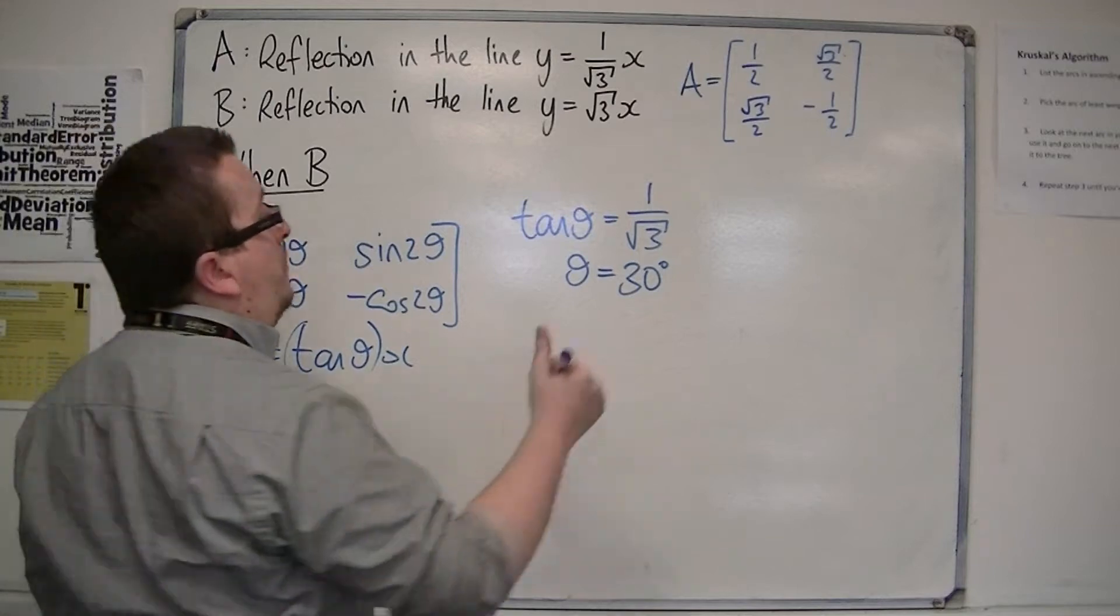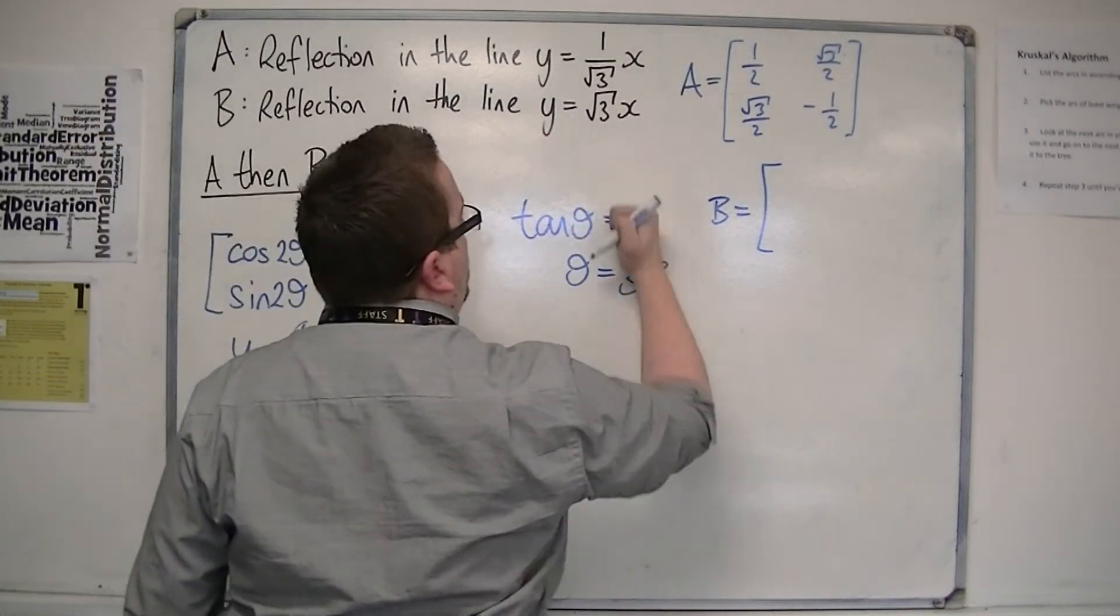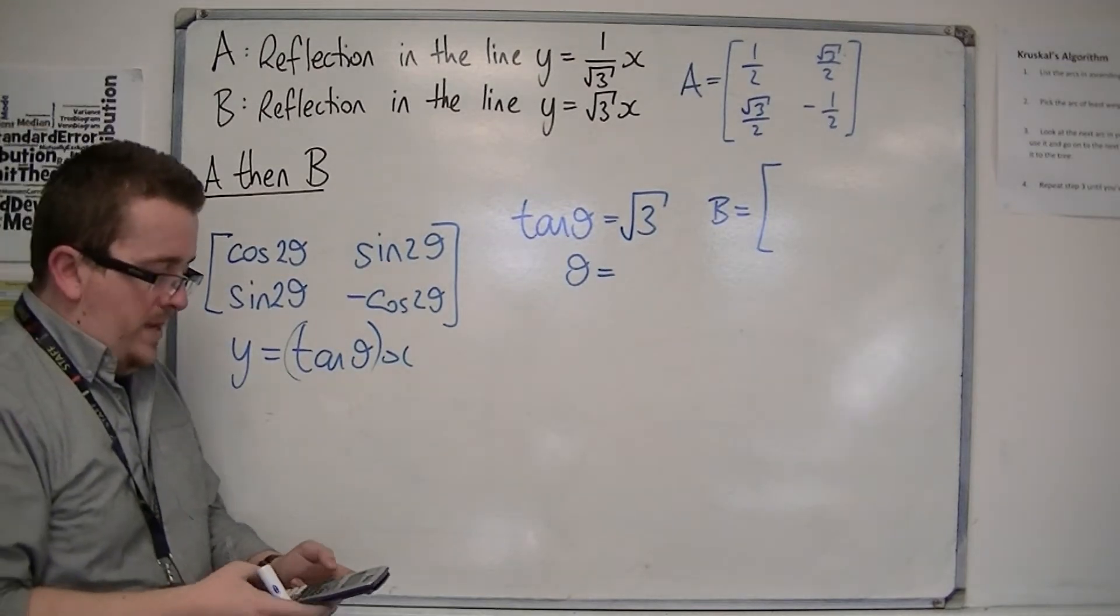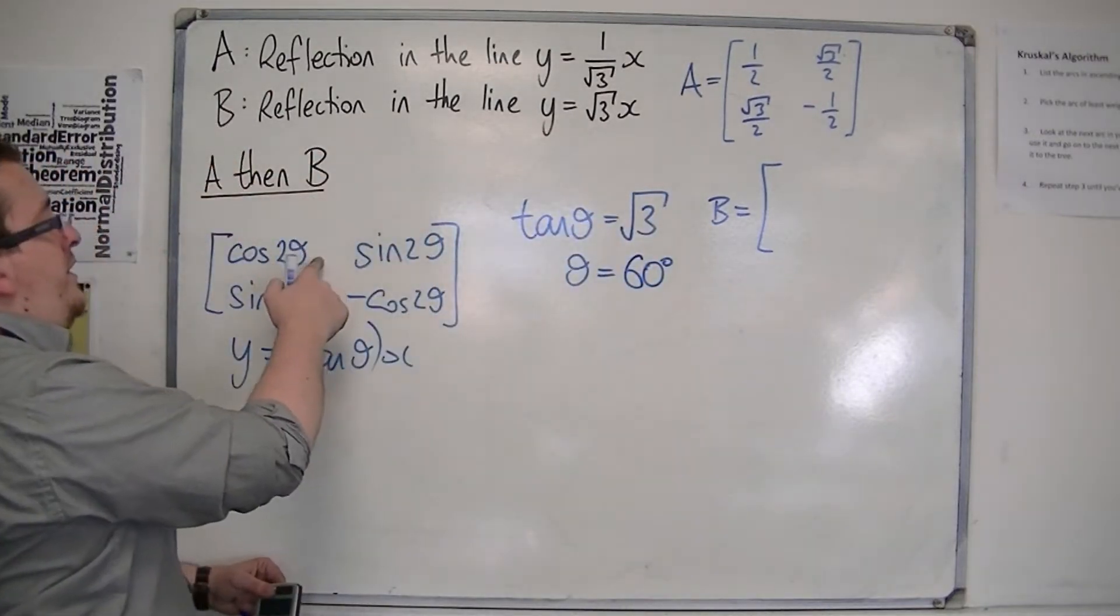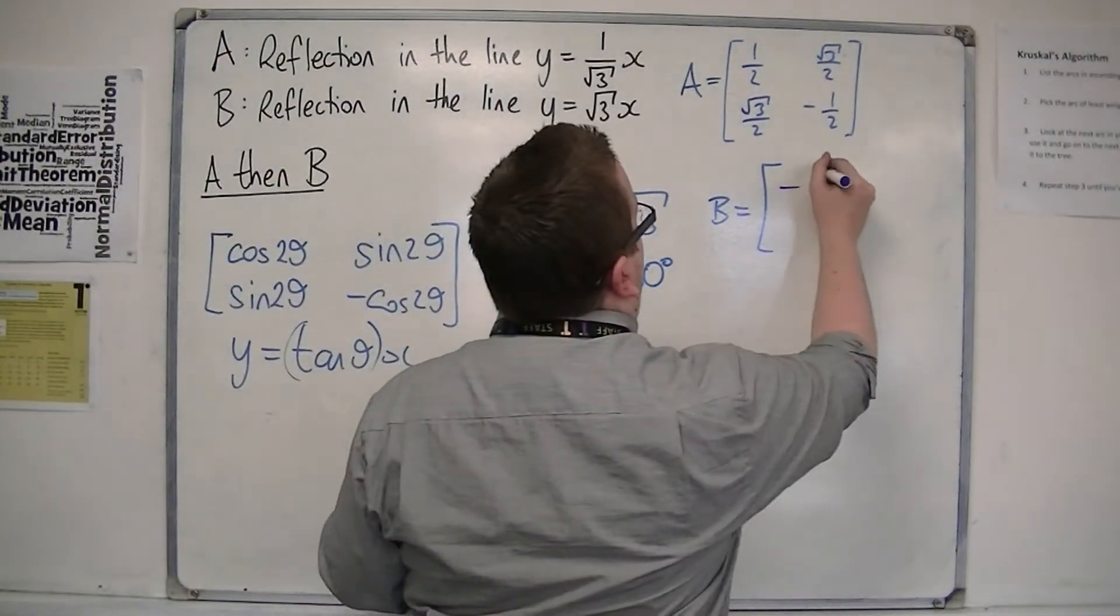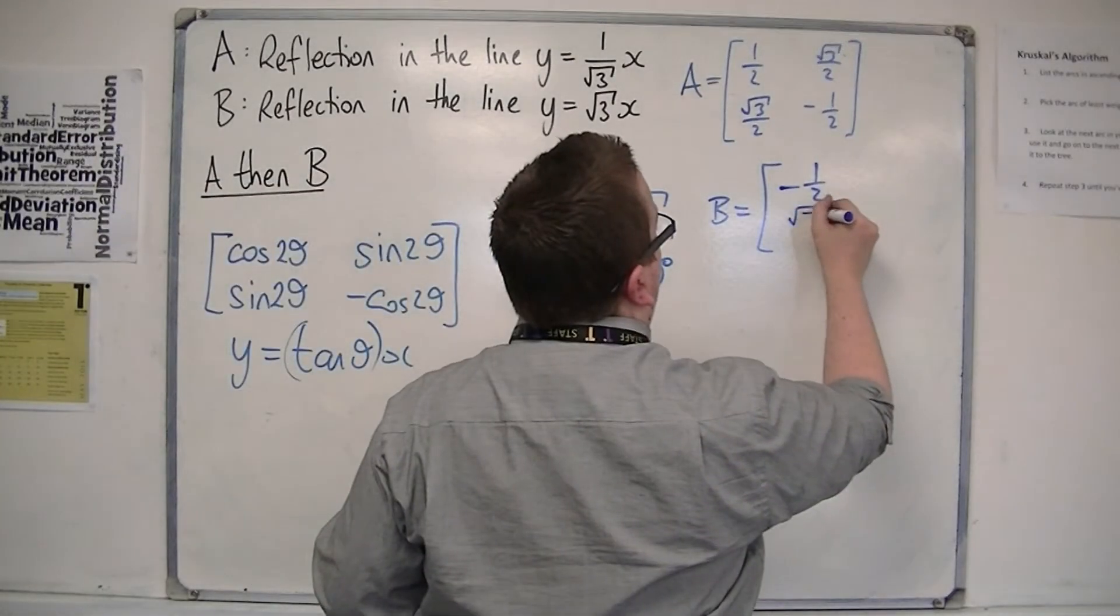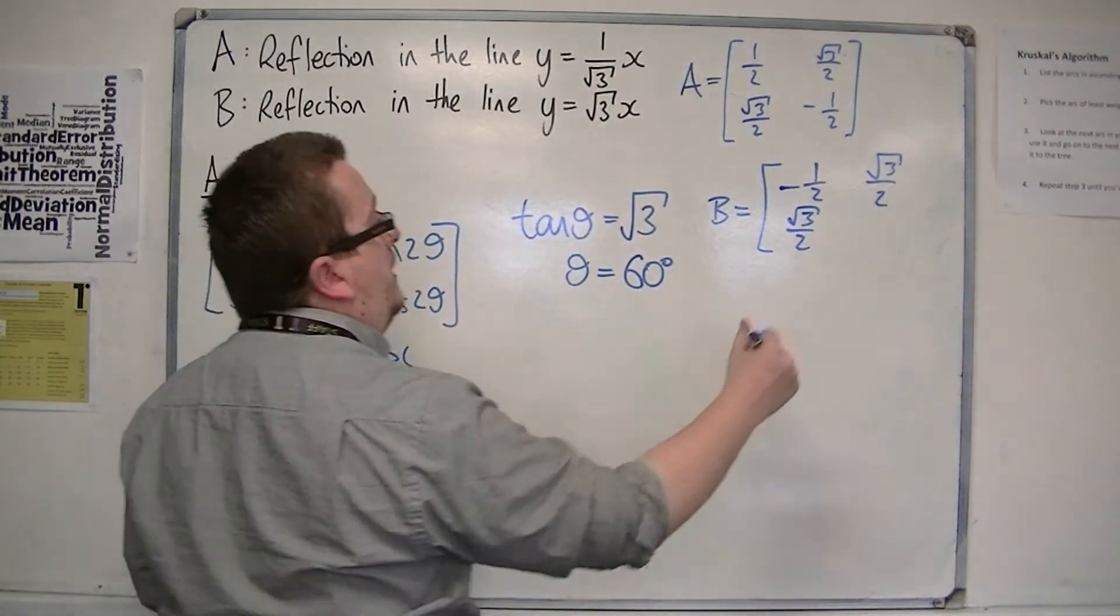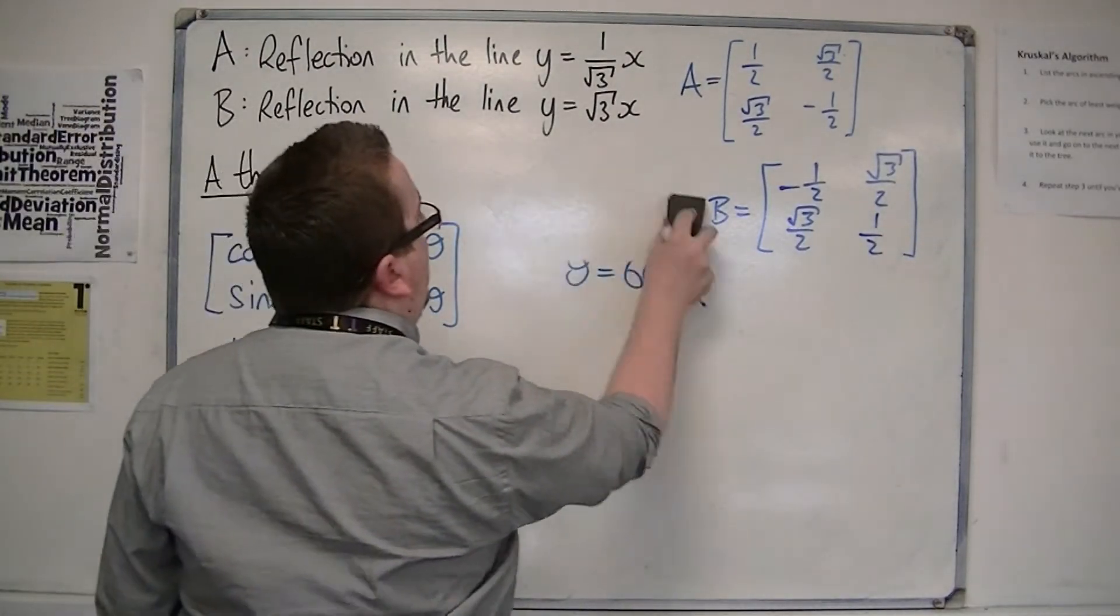Now, we need to find matrix B. In a similar way, we can look at tan theta is equal to root 3. If you inverse tan root 3, you get 60 degrees. If you now substitute 60 degrees into this matrix, we have cos of 120, which is minus 1 half. You've got sin of 120, which is root 3 over 2. And that's minus minus 1 half, so 1 half. There's your two matrices, A and B.